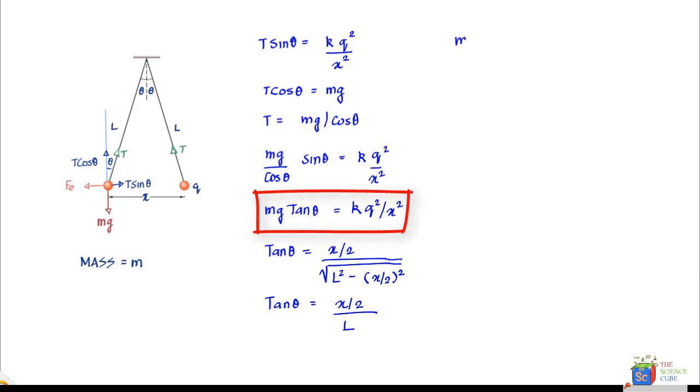This equals k q square upon x square, which therefore gives x cube equals 2 L k q square upon m g.